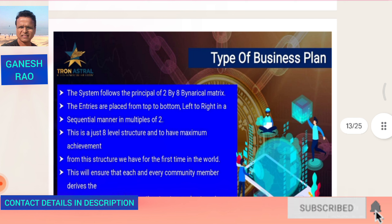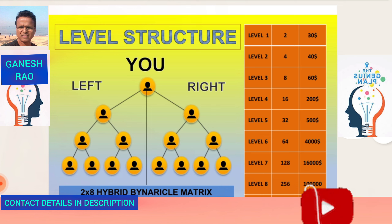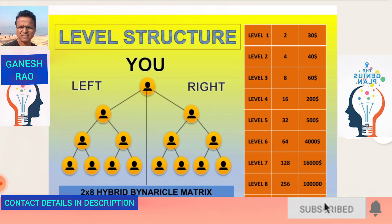Maximum potential of this platform gives maximum earning — this is the best platform to do that. In the 2-by-8 hybrid binary matrix: level 1 will have 2 people, level 2 has 4, level 3 has 8, then 16, 32, 64, 128, and 256. That gives a total team of 510 people at level 8.